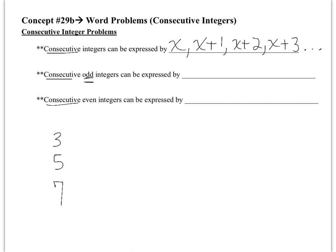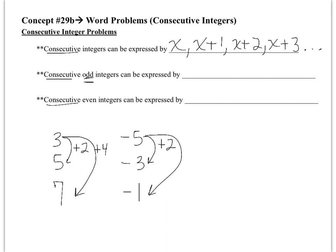If I had odd integers starting with a negative number, say negative 5, the next odd integer would be negative 3 and then negative 1. What's happening as I go from 3 to 5 is I'm not adding 1 anymore — I'm adding 2. And from 3 to 7, I'm adding 4. Same with negative 5 to negative 3: adding 2; negative 5 to negative 1: adding 4. So for consecutive odd integers, if the first number is x, the next one would be x plus 2, then x plus 4.